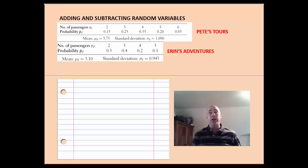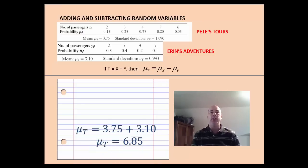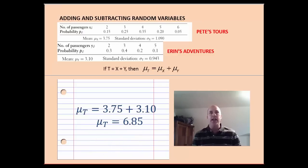What I'd like to know is, combined between Pete's Tours and Erin's Adventures, what is the mean number of people we should expect? What's the expected value? And what's the standard deviation? So first of all, if t equals x plus y, we want the total. Basically this first rule says that we're allowed to add the means, and that should seem to make sense here. So in this case, we can take 3.75, which is the mean for Pete's Tours, and 3.10, which is the mean for Erin's Adventures. And we can just add those together, which means combined, on average, they average 6.85 passengers per day. That's their expected value.